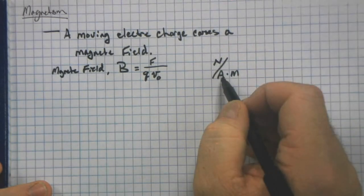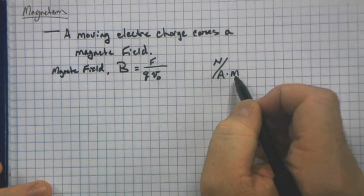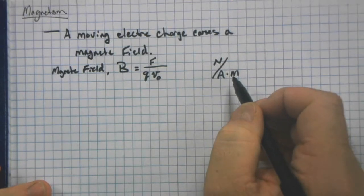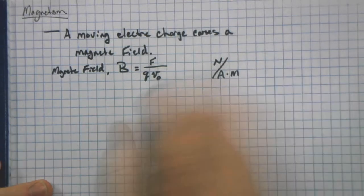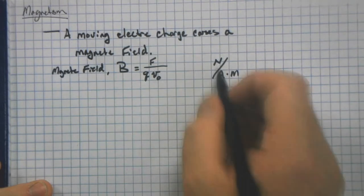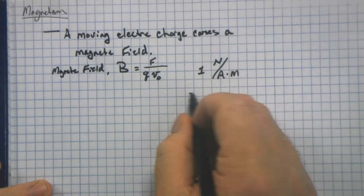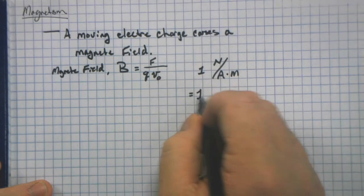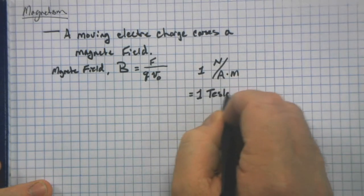So newtons, this is coulombs per second, and this is meters, right? You can follow me there. And this unit of one newton per amp meter is equal to one Tesla. Yes, the same guy.